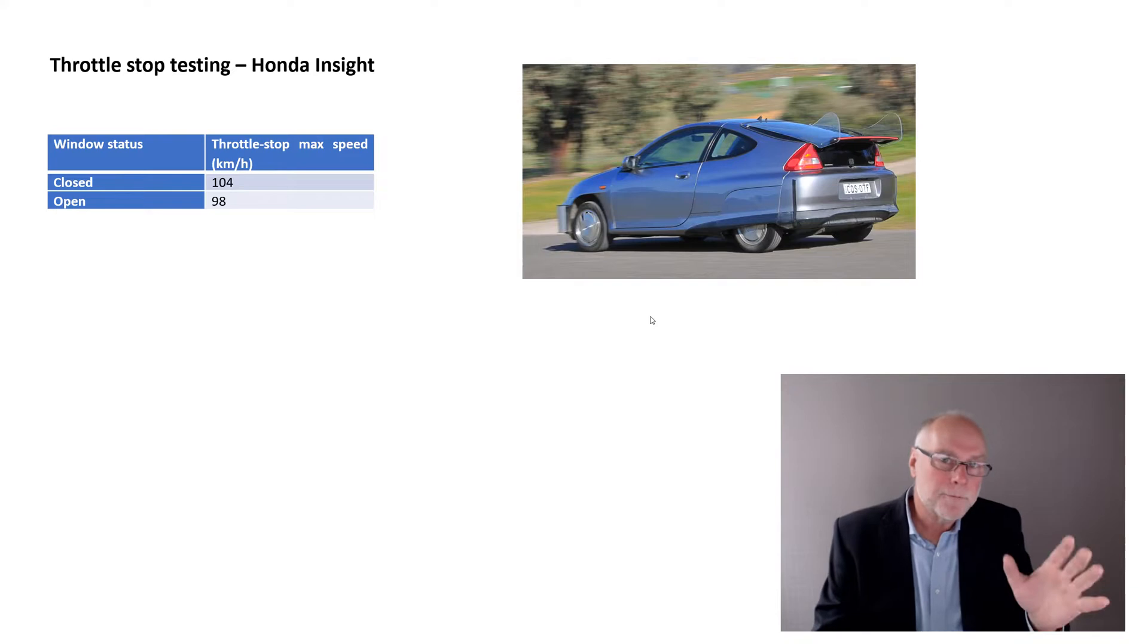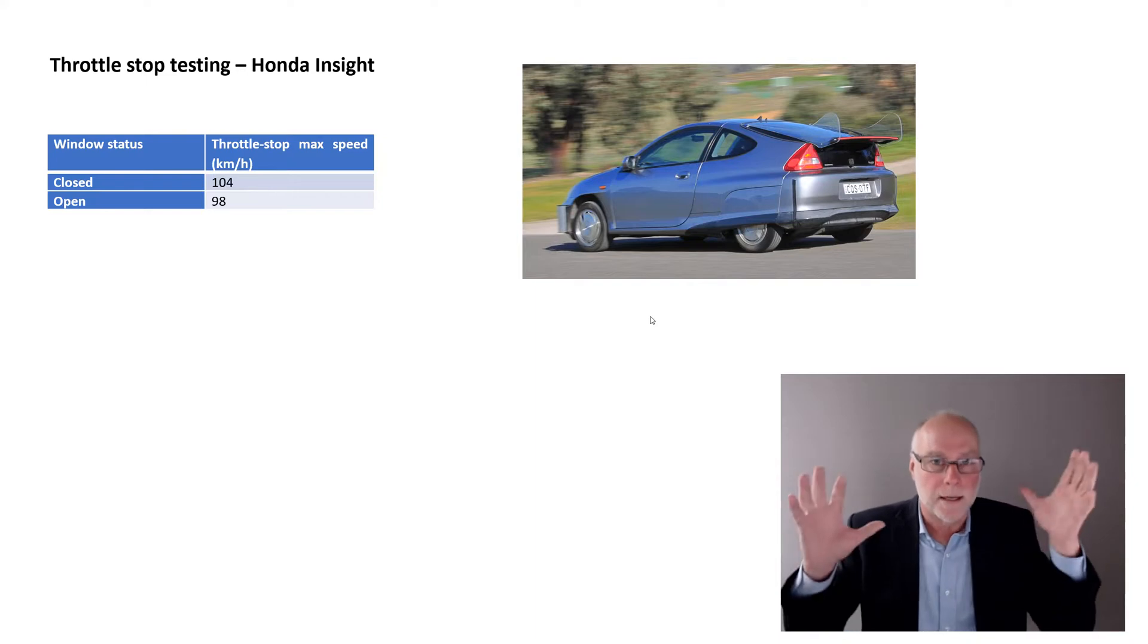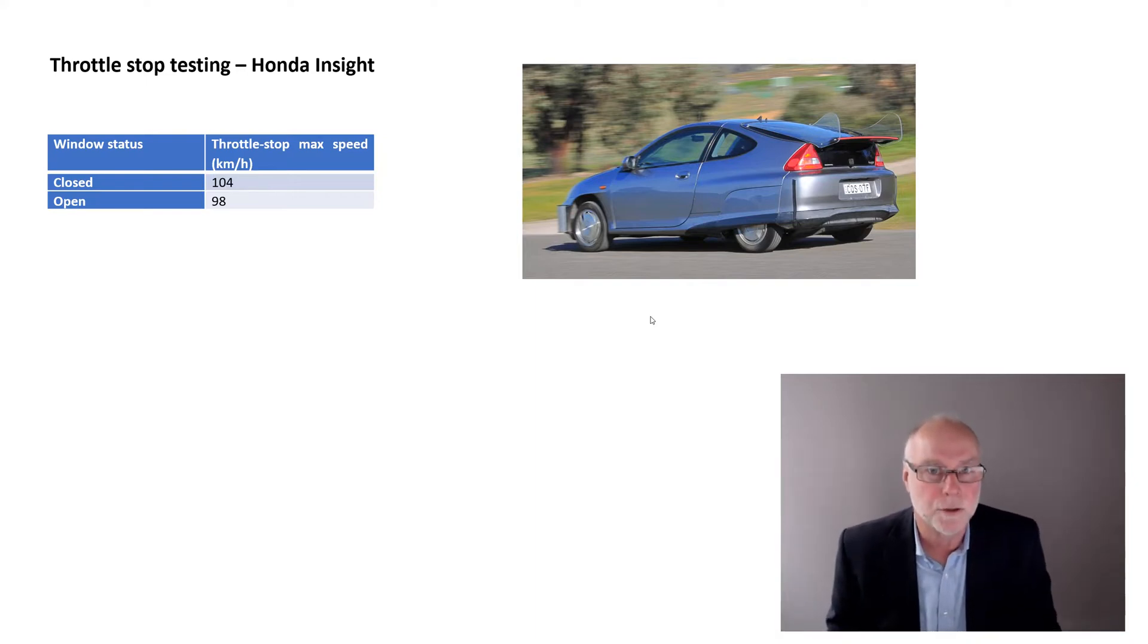So the very first test you should always do when you are trying to measure changes in drag is do one test with the windows up and do one test with the windows down. It doesn't matter if it's throttle stop testing, fuel economy testing, coast down testing. You make a deliberate known aerodynamic change to the car, and you make sure you can measure its results.